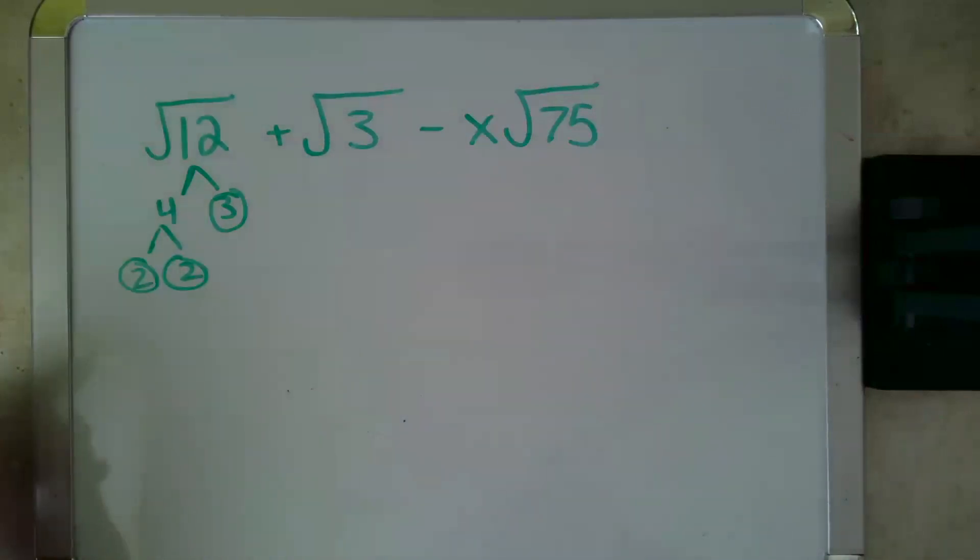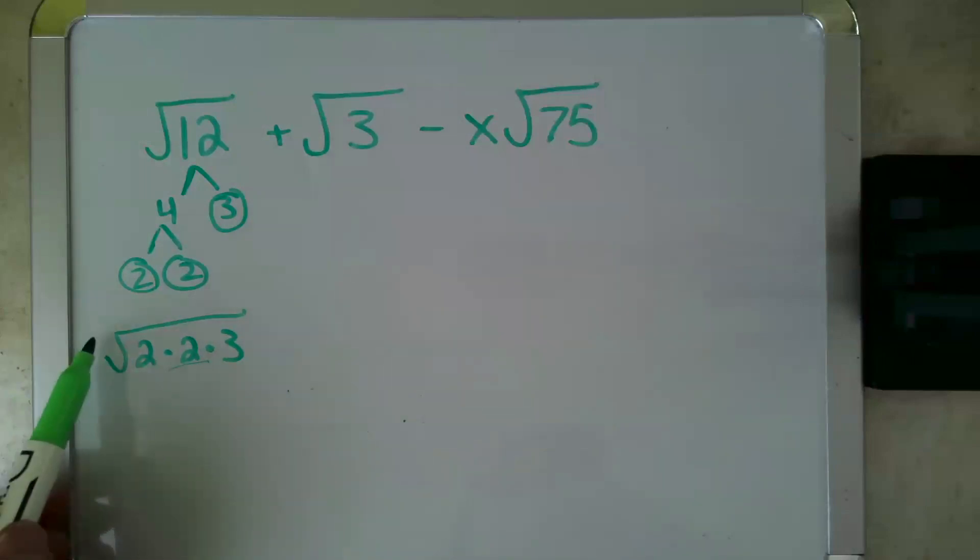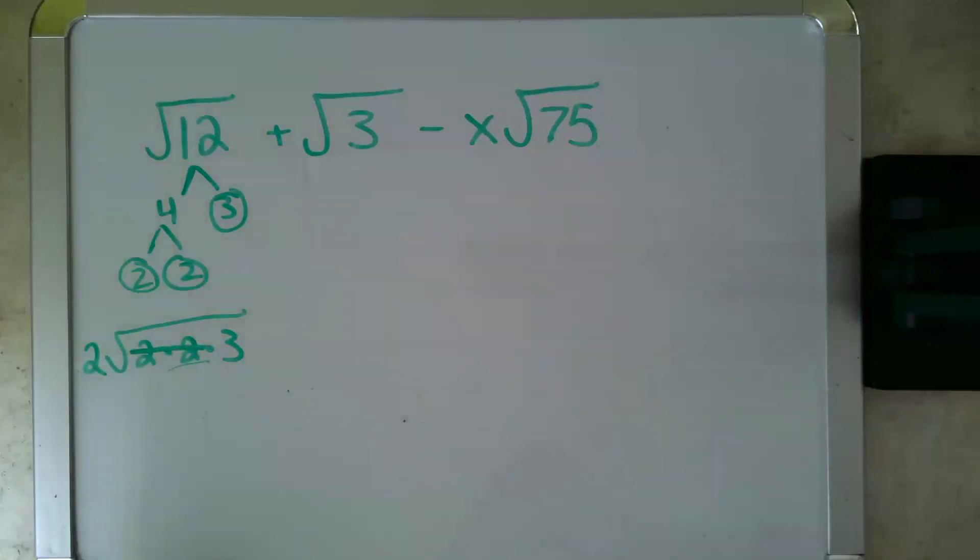So root 12 could be rewritten as root 2 times 2 times 3, and the rule with roots is whatever the power of the root, in this case a square root power is 2, you need that many of a factor inside to pull out 1 to the outside. So this is a square root. I need 2 factors inside to make 1 on the outside. So root 12 simplifies to 2 root 3.